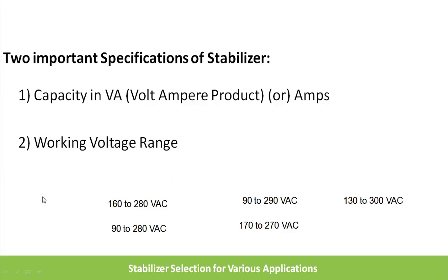Another specification is delay. For stabilizers selected for TVs, the delay is in the order of seconds. For compressor loads like ACs or refrigerators, the delay is in the order of minutes. What this means is: whenever power restores after a fluctuation or outage, the voltage will not be immediately transferred to your appliance — there is a delay, and this delay is important for protecting your appliance.